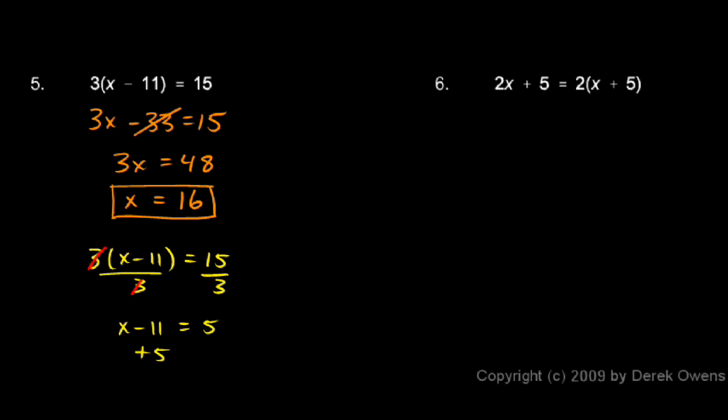And then you can add 11 to each side. And on the left the minus 11 and the plus 11 cancel out, and you're just left with x equals, and on the right side you have 5 plus 11 which is 16.